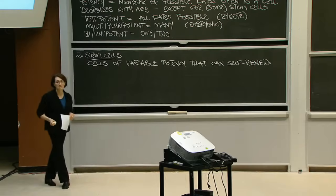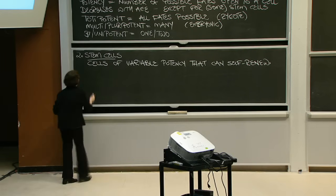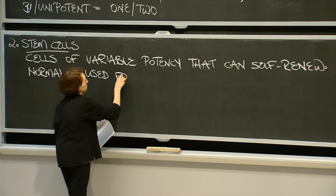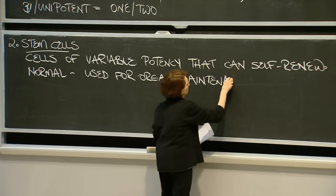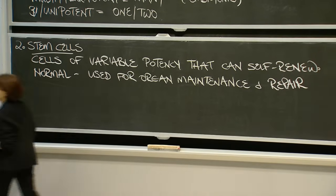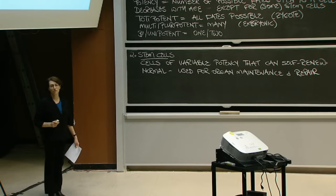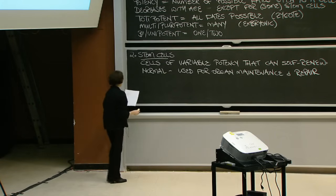Despite the hype and covers of Time magazine and front pages across the world, stem cells are normally found in our bodies. And normally, as we'll explore, they're used for organ maintenance and repair.